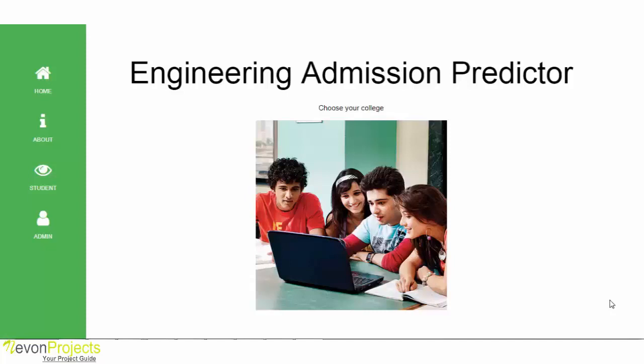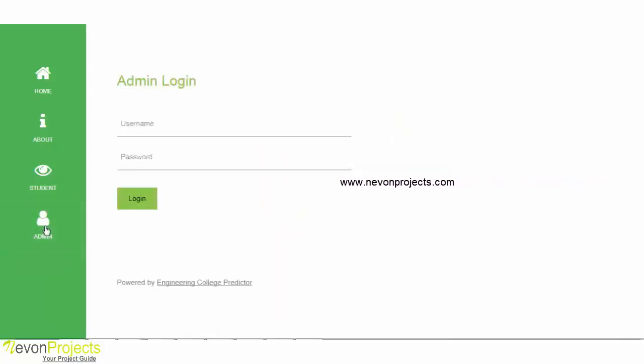Welcome to the demonstration of the Engineering Admission Predictor system. The system helps students predict and shortlist colleges of their choice by keeping cutoffs in consideration. The system calculates the average cutoff of previous years of the colleges and displays colleges that fall within the student's specified cutoff marks. Let's see how the system works by first logging in as an admin.